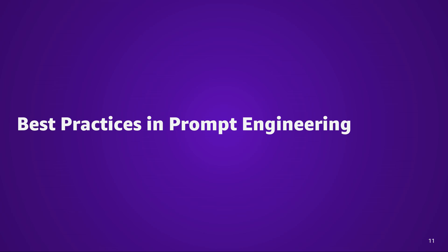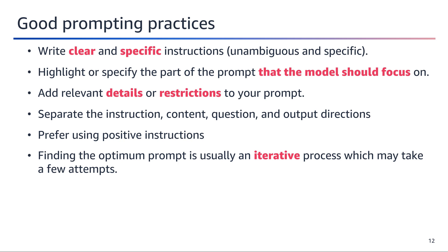In this section, we will discuss some best practices in prompt engineering. Good prompting practices play a crucial role in effectively utilizing language models and obtaining high-quality outputs. Clarity and specificity are paramount when crafting instructions, as ambiguity can lead to misinterpretations and undesired results. Highlighting or explicitly specifying the aspects of the prompt that the model should prioritize helps ensure it focuses on the most relevant information. Incorporating relevant details or constraints allows you to shape the output according to your specific needs, providing context, setting boundaries, or specifying desired characteristics.